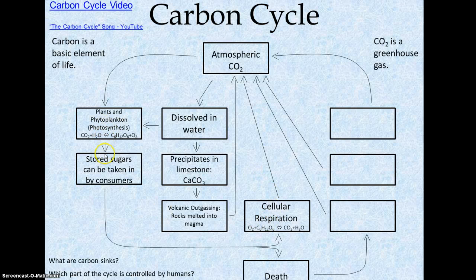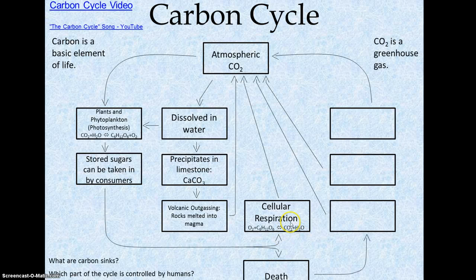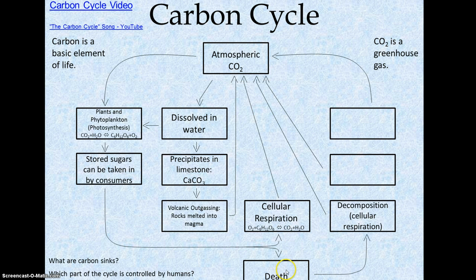Back to these plants that have stored the sugars and potentially have been consumed — they can either die or produce waste, or they can just cellular respirate. Plants and animals all cellular respirate; sometimes we forget that plants do that too. The outcome is CO2, which is released into the atmosphere. The sugar that was storing the carbon is broken down through metabolism and becomes CO2. The dead stuff and waste will decompose — decomposers are cellular respirators, so that is similar to the same equation; we just have a fancy name: decomposers.